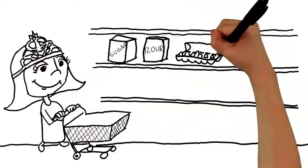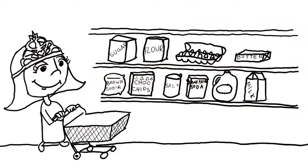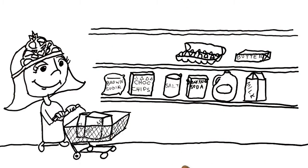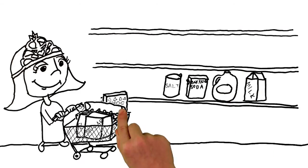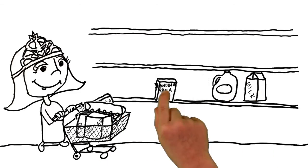And she got all the ingredients: sugar, flour, eggs, butter, brown sugar, chocolate chips, salt, baking soda, vanilla extract and milk.